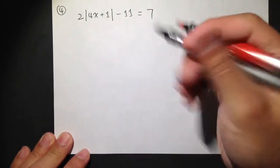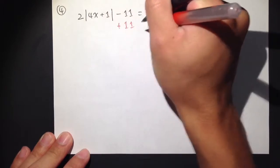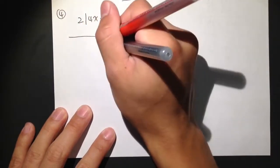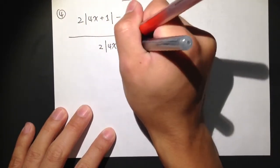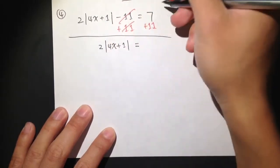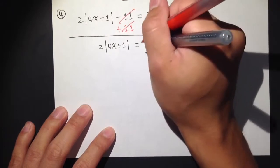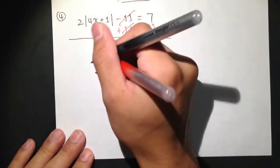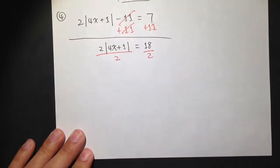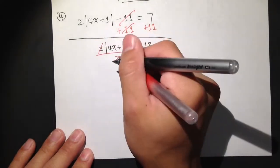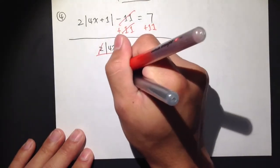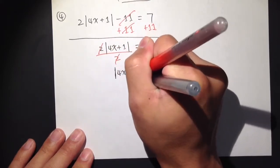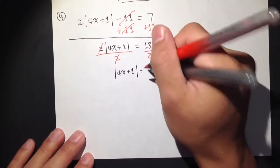We are subtracting 11, so we add 11 on both sides first. These two cancel, and I end up with 2 times the absolute value of 4x plus 1 equal to 7 plus 11, which is 18. We have 2 times the absolute value, so we divide both sides by 2. The 2s cancel, and the absolute value of 4x plus 1 is now isolated and equal to 9.